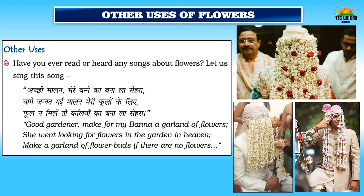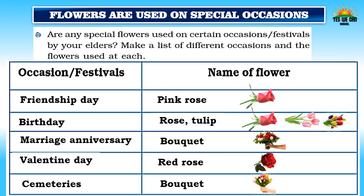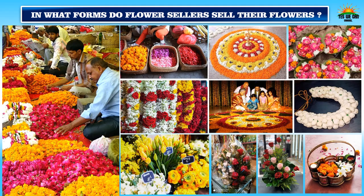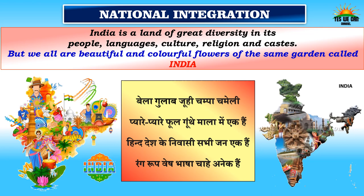Have you ever read or heard any songs about flowers? Let's sing this song. Special flowers are used on certain occasions: pink rose on Friendship Day, rose or tulip on birthdays, a bouquet on marriage anniversaries, red rose on Valentine's Day, and bouquets at ceremonies. Flower sellers sell flowers as loose flowers, loose petals, and bouquets, and flowers are also used for decoration and religious purposes. India is a land of great diversity in its people, languages, culture, religion, and castes — but we all are beautiful and colorful flowers of the same garden called India.